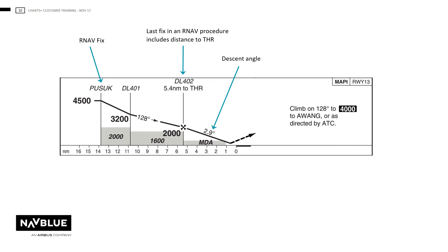Note: when the profile has a different angle of descent from the fix to the FAF and the FAF to the threshold, show the profile with different angles and place the glide path angle after the FAF. Here is an example of how NAVBLUE will present a bust altitude in the missed approach text. The runway symbol in the profile is shown like this. If the threshold is displaced, NAVBLUE will show the symbol with a small gap as shown here.